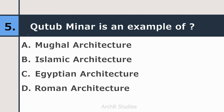Fifth question: Qutub Minar is an example of which architecture — Mughal, Islamic, Egyptian, or Roman? The right answer is Islamic Architecture.